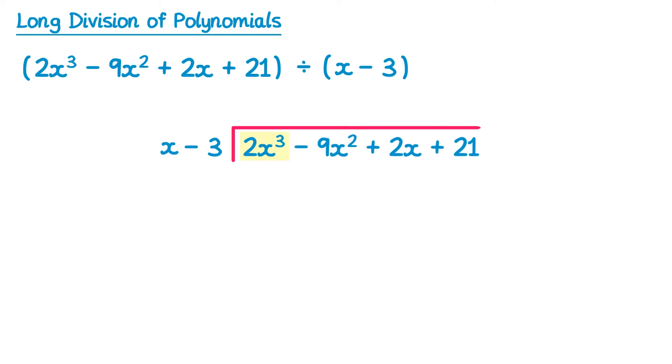And then we'll do 2x cubed divide by x, which just gives you 2x squared. Then we take this 2x squared and multiply it back through by the whole linear term. 2x squared times x is 2x cubed. And 2x squared times negative 3 is negative 6x squared. Then we're going to subtract these two here. 2x cubed take away 2x cubed is 0. Negative 9x squared take away negative 6x squared. You have to be really careful here with your signs. When we take away a negative we really add. So this comes out as negative 3x squared.